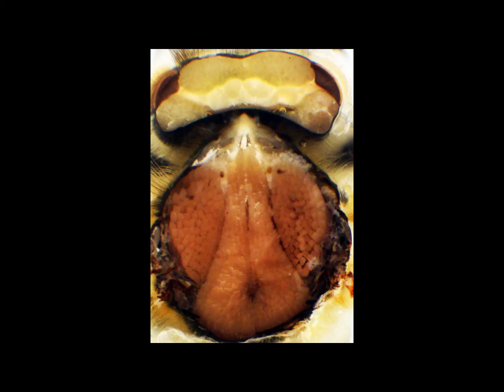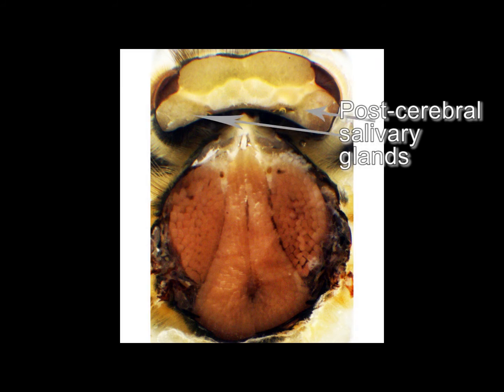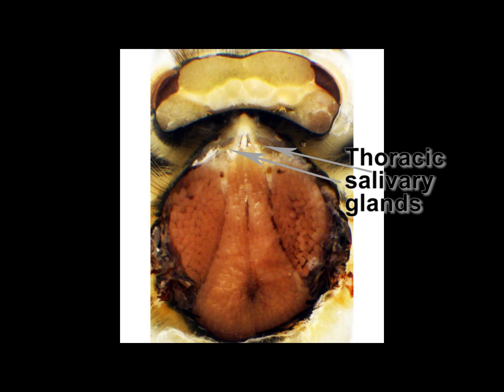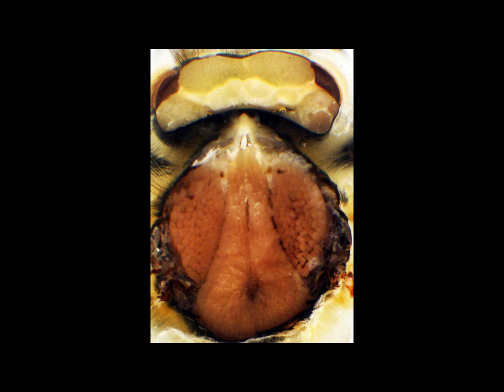Considering these three categories broadly speaking: the secretions which mix with food are produced by two pairs of glands. One pair sits just behind the brain and the other pair sits in the front of the thorax. Both of these pairs have ducts which join together before opening at the back of the mouth.